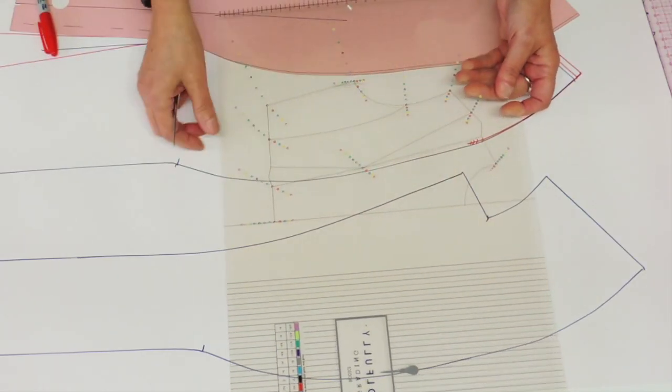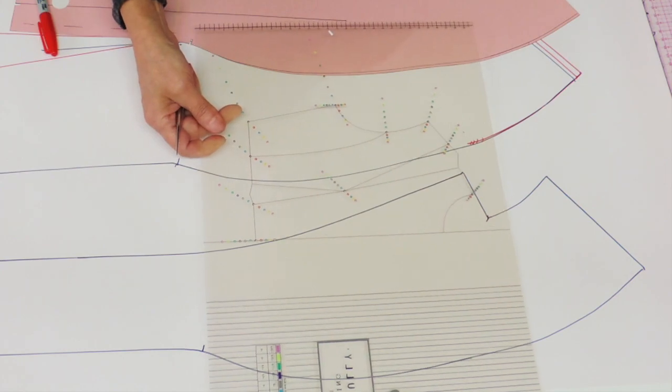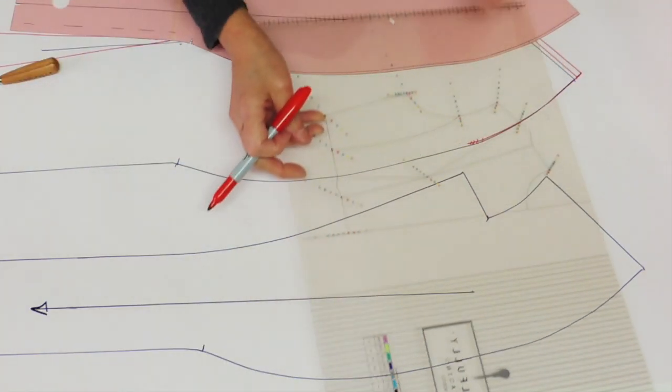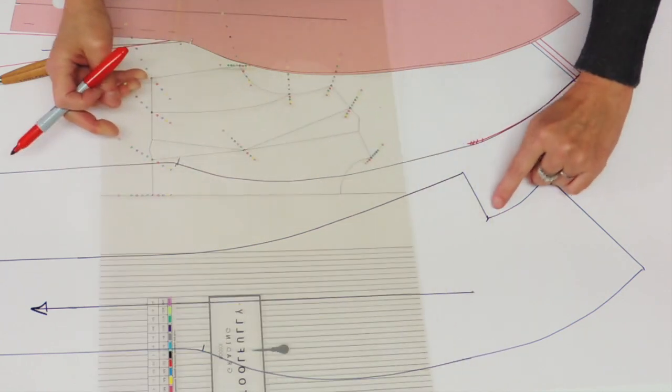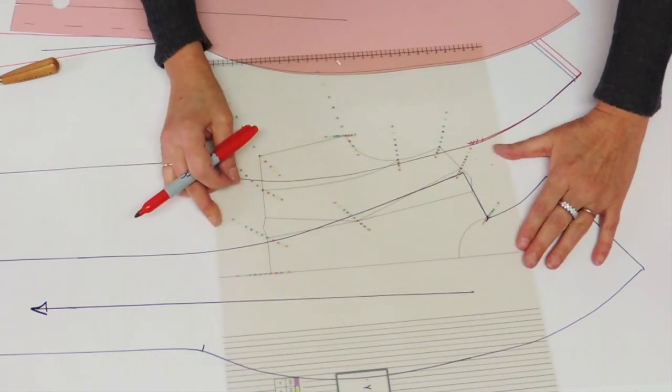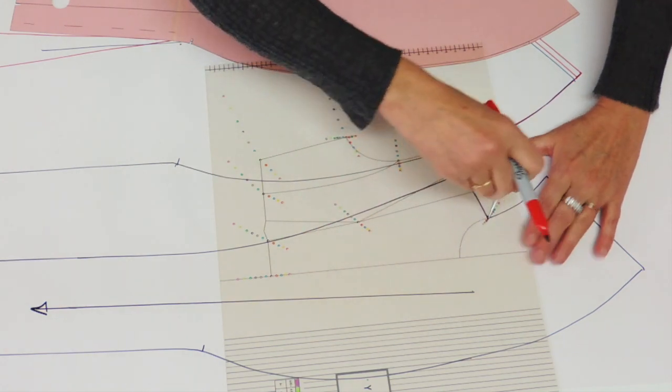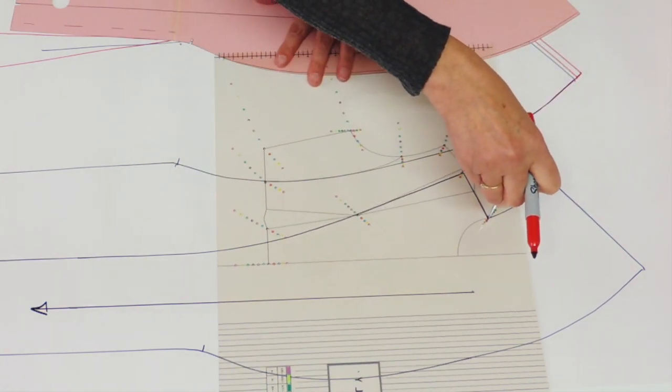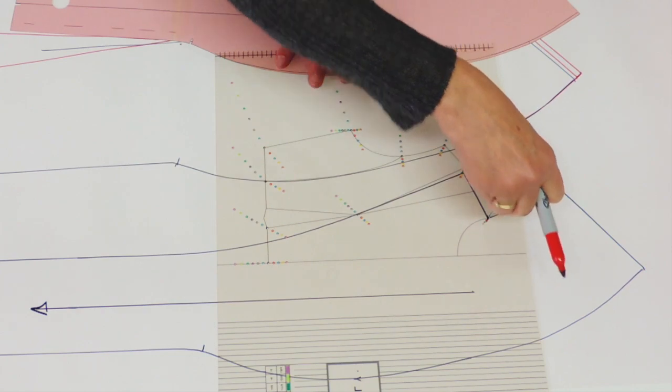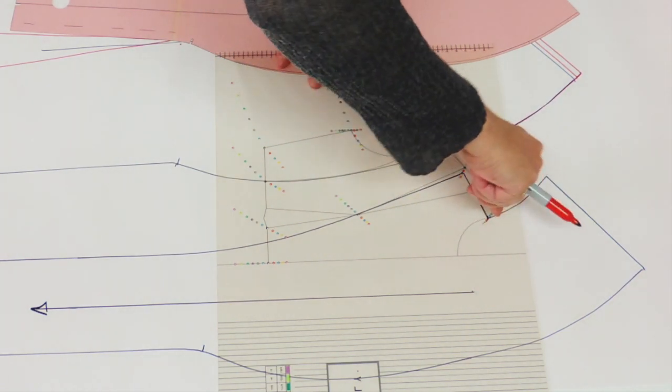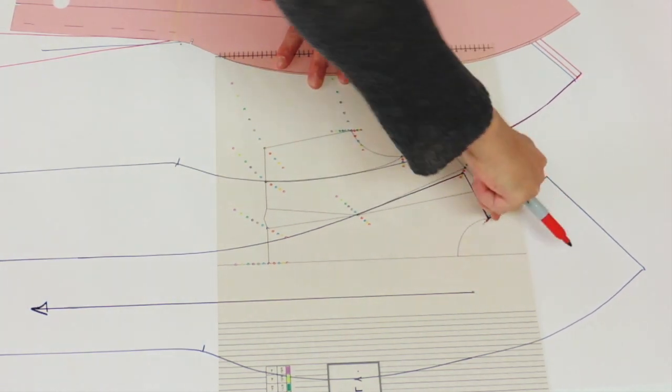We'll move at the shoulder. So we have two points to grade. Again, we'll use the neck and shoulder point to replace it on the neck and shoulder point. Hold it and put your grain line parallel by pivoting the ruler and point out the two sizes bigger that we need.